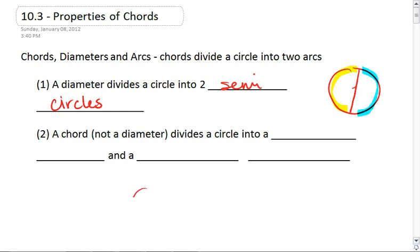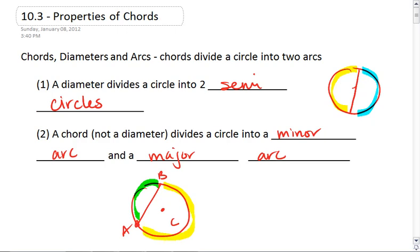A chord that is not a diameter, so it's not going to pass through our center, will divide our circle into a minor arc and a major arc. We know we have our minor arc, the smaller of the two arcs, and our major arc, which is the bigger of the two arcs.